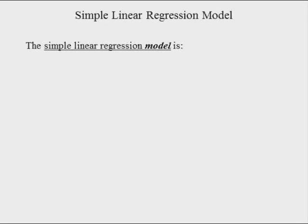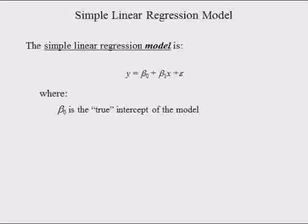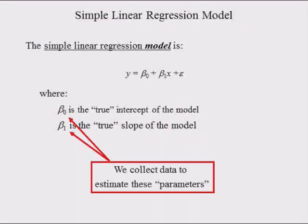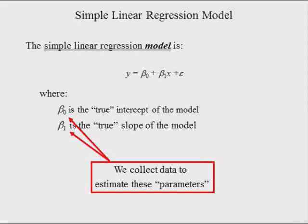The simple linear regression model is the true relationship between dependent variable y and independent variable x, where beta 0 is the true intercept of the model and beta 1 is the true slope of the model. Beta 1 is also called a coefficient. We collect data to estimate these parameters, which are analogous to the population variance and mean. Although we'll never know the values of beta 0 and beta 1, we can estimate them using data and a regression package contained in, say, Excel.